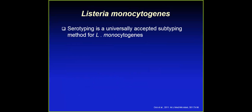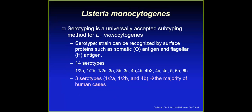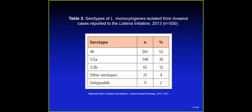Listeria serotyping is a universally accepted sub-typing method for Listeria monocytogenes, based on surface antigens as well as flagellar antigens. There are about 14 serotypes. In fact, about three serotypes — 4B, 1/2A, and 1/2B — are the major causes of foodborne illness, according to FDA and CDC data.